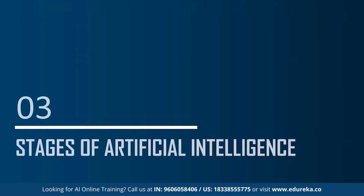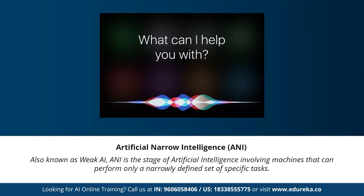Now let's understand the different stages of artificial intelligence. Many articles state that artificial general intelligence, artificial narrow intelligence, and artificial super intelligence are the different types of AI, but to be more precise, these are actually three different stages of AI — distinct from the types of AI. Under the stages of AI, we have artificial narrow intelligence, artificial general intelligence, and artificial super intelligence.